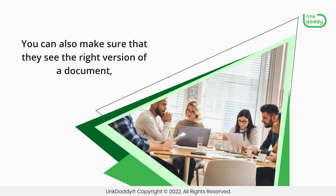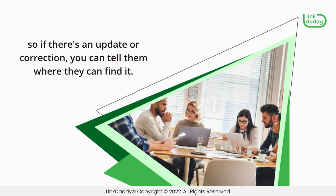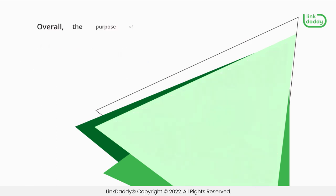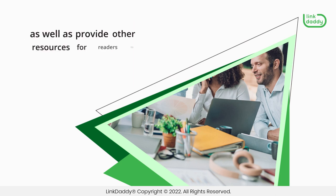You can also make sure that they see the right version of a document, so if there's an update or correction, you can tell them where they can find it. Overall, the purpose of external links is to provide readers with additional information about what they're reading, as well as provide other resources for readers to explore.